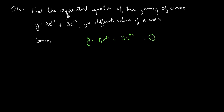This is equation 1. We have a family of curves with two arbitrary constants. We need to eliminate these two arbitrary constants by differentiating, and the differential equation will be second order since we have two arbitrary constants. For anyone unfamiliar, we use the formula: d by dx of e raised to nx equals n into e raised to nx. This is the formula we are going to use throughout this solution.